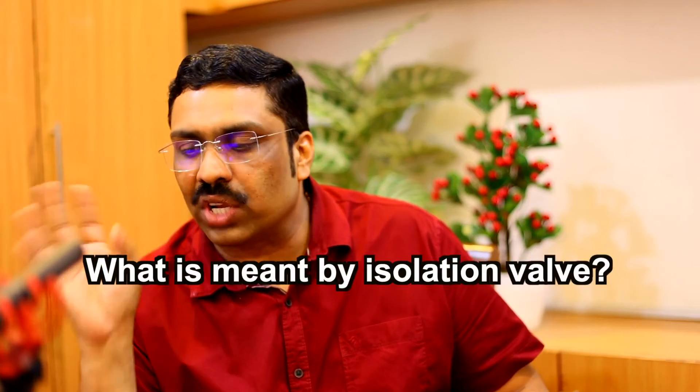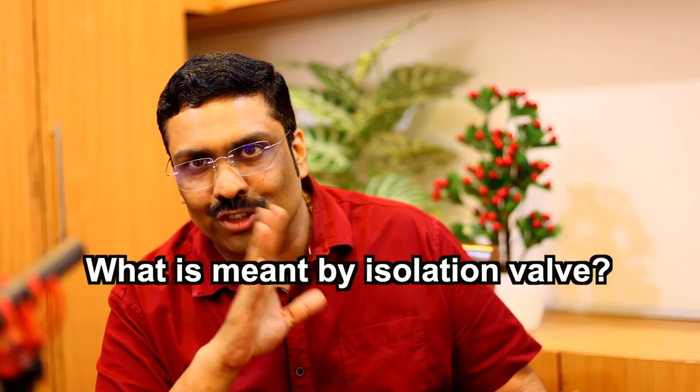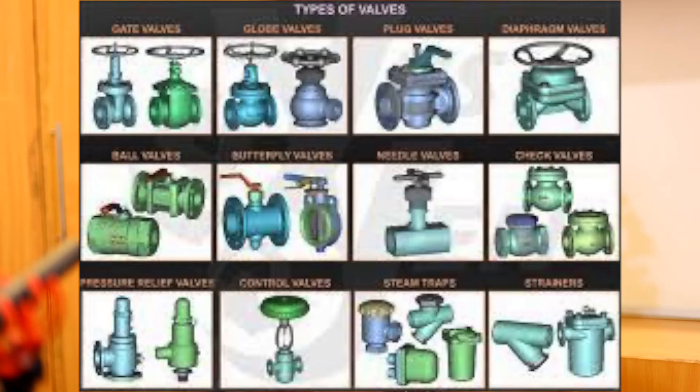What is meant by an isolation valve? An isolation valve is used for isolating and stopping the flow of liquid or air in any pipe. It is a common name — it may be a gate valve, a butterfly valve, or a ball valve, or whatever it is. Isolation valves are used everywhere in the construction industry: plumbing, HVAC, chilled water, and more.